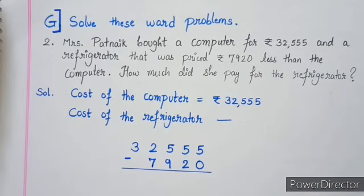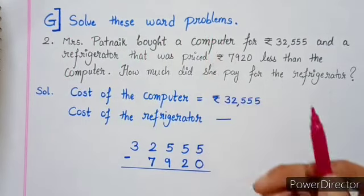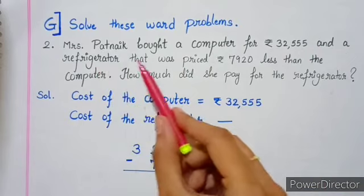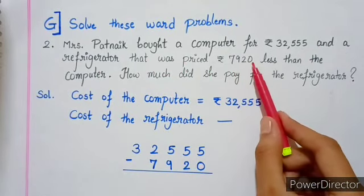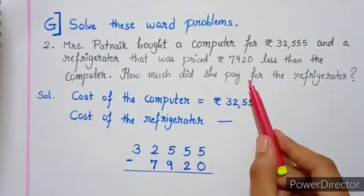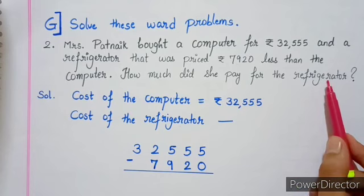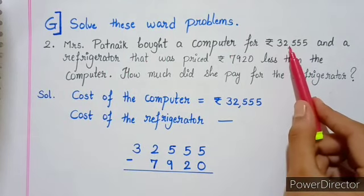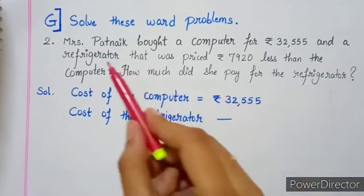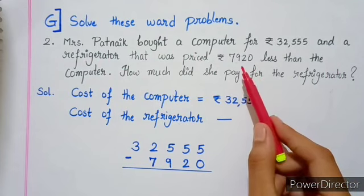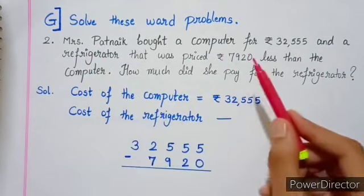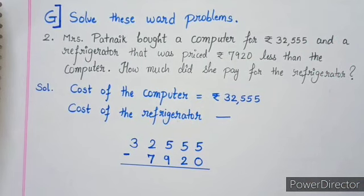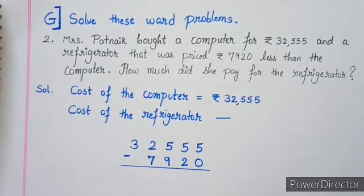Now let's see one word problem from your textbook. Question G: Solve these word problems. Mrs. Patnayak bought a computer for Rs. 32,555 and the refrigerator that was priced Rs. 7,920 less than the computer. How much did she pay for the refrigerator? First we will write what is known to us: that is cost of the computer. Now cost of the computer is clearly mentioned here, 32,555. But when it comes to the cost of the refrigerator, it is not clearly mentioned. What has been said? It is said that the cost of the refrigerator is Rs. 7,920 less than the computer.